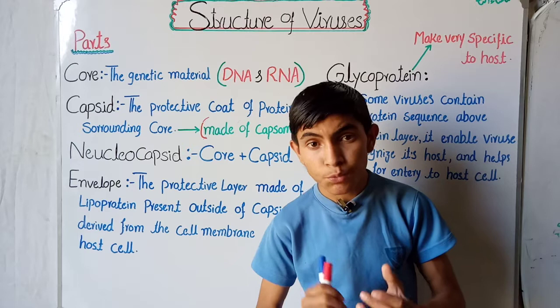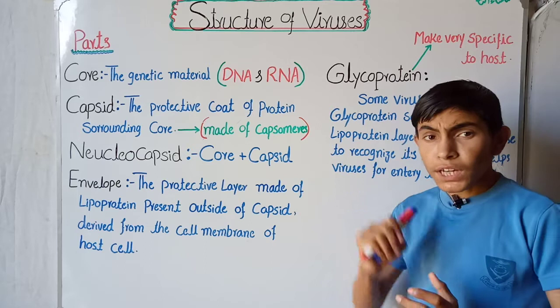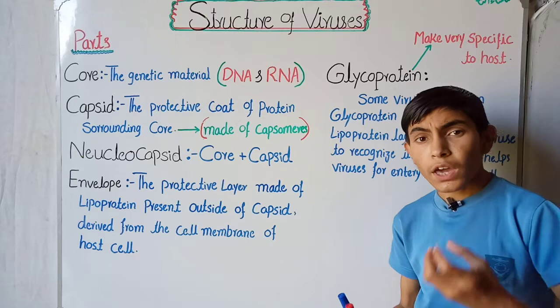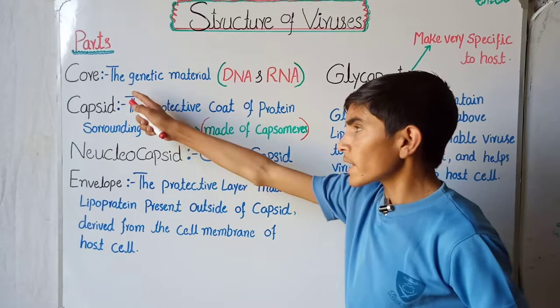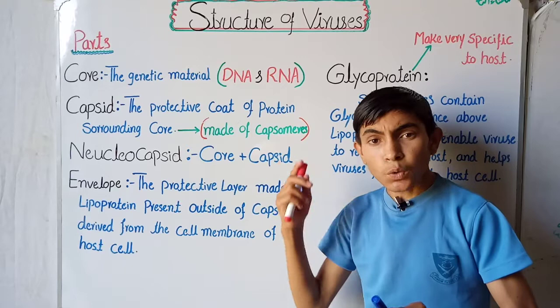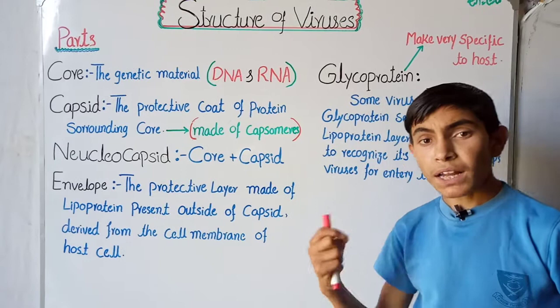Today we are talking about the structure of virus — how many parts viruses have and what is the composition of virus. Virus is the most simplest organism, so its parts are also very simple. The first part is the core. Core is the genetic material — DNA or RNA.